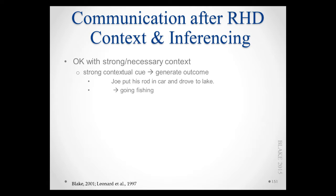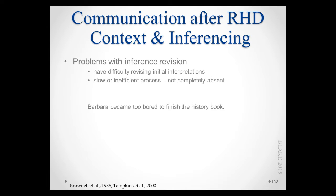What we found is that people with right brain damage in general do fine with bridging inferences or coherence inferences — those needed to tie things together. They are also okay with elaborative inferences when there is a very strong cue that leads you to generate the outcome, such as Joe putting his rod in the car and driving to the lake, where really the only likely explanation is that he is going fishing. People with right brain damage are able to generate those inferences.